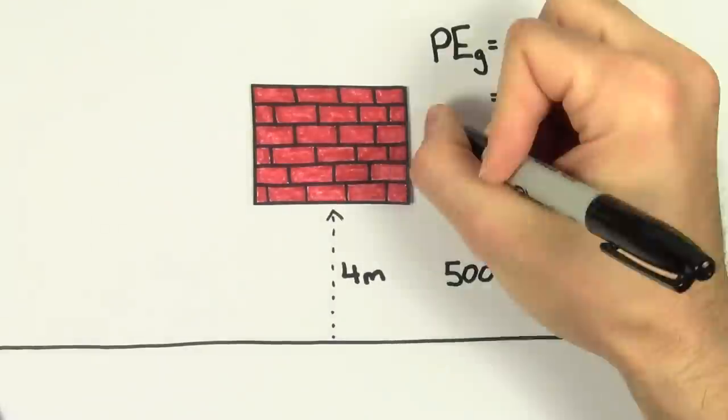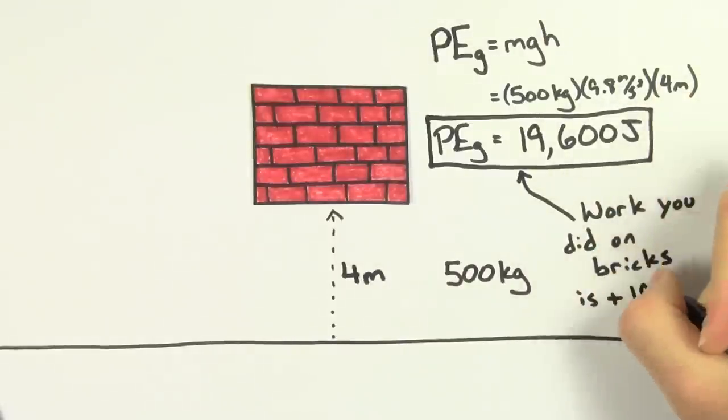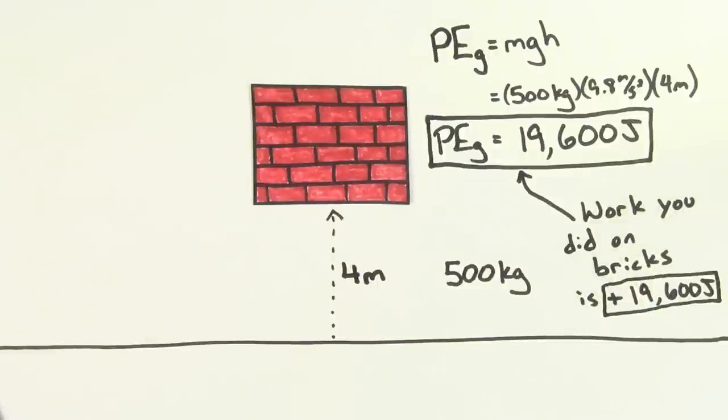If we solve, we get that the bricks gained 19,600 joules of gravitational potential energy. That means that the work we did on the bricks was positive 19,600 joules. It's positive because our force gave the bricks energy.